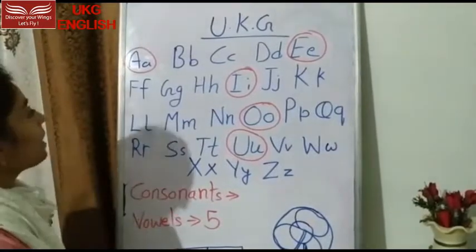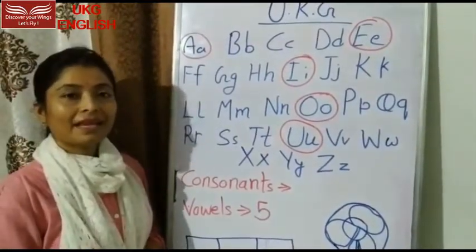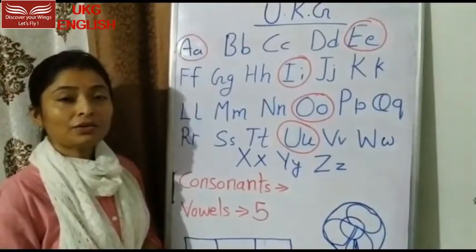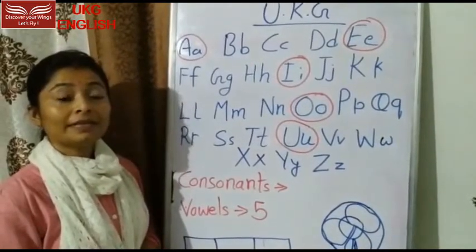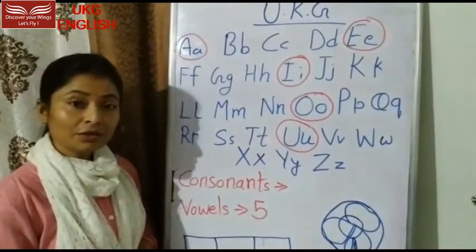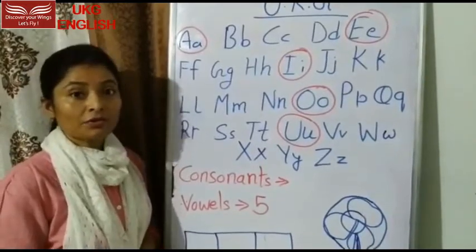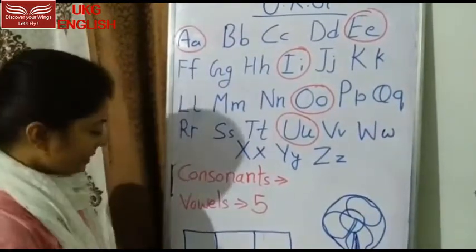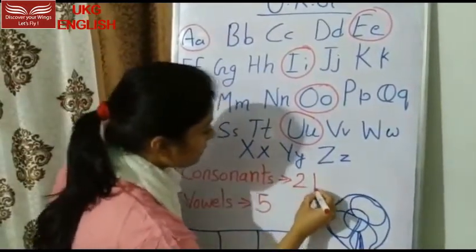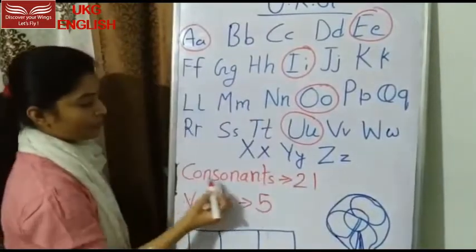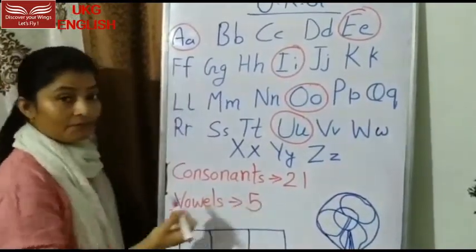And how many consonants? Twenty-one consonants. Twenty-one consonants and five vowels. So I will write here: twenty-one consonants and five vowels.